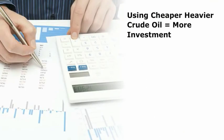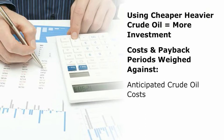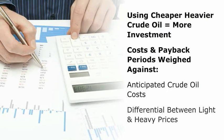Using cheaper heavier crude oil means more investment in upgrading processes. Costs and payback periods for refinery processing units must be weighed against anticipated crude oil costs and the projected differential between light and heavy crude oil prices.